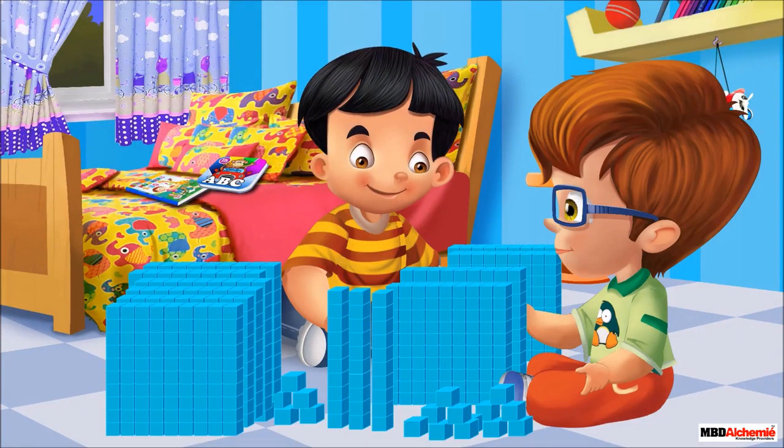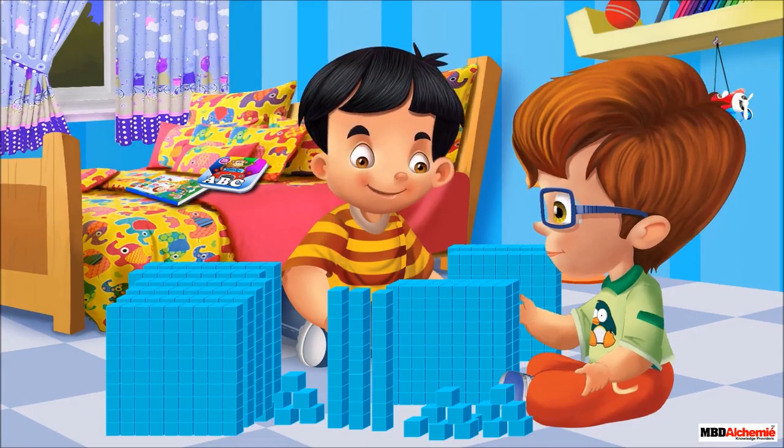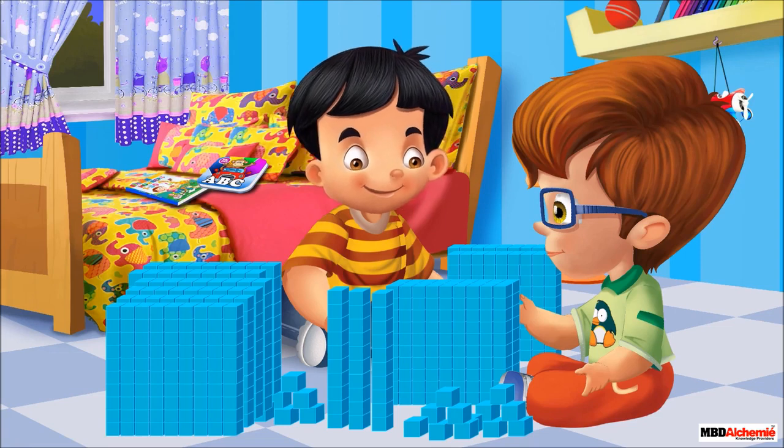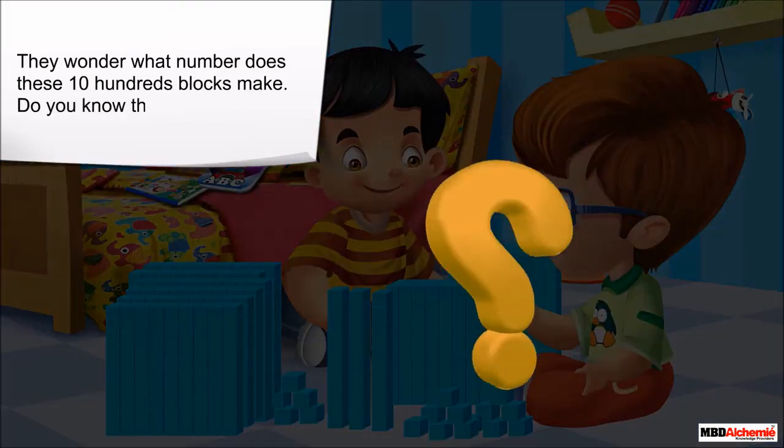Sid and Neil are playing with blocks. They started joining the hundreds blocks. They took ten hundreds blocks. They wonder what number do these ten hundreds blocks make. Do you know the answer? As ten ones make one ten, ten tens make one hundred...